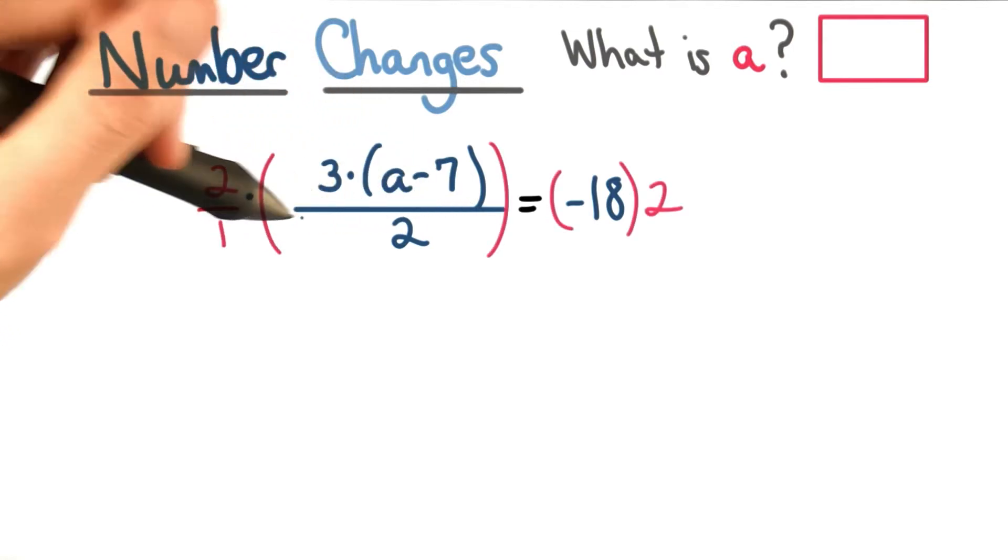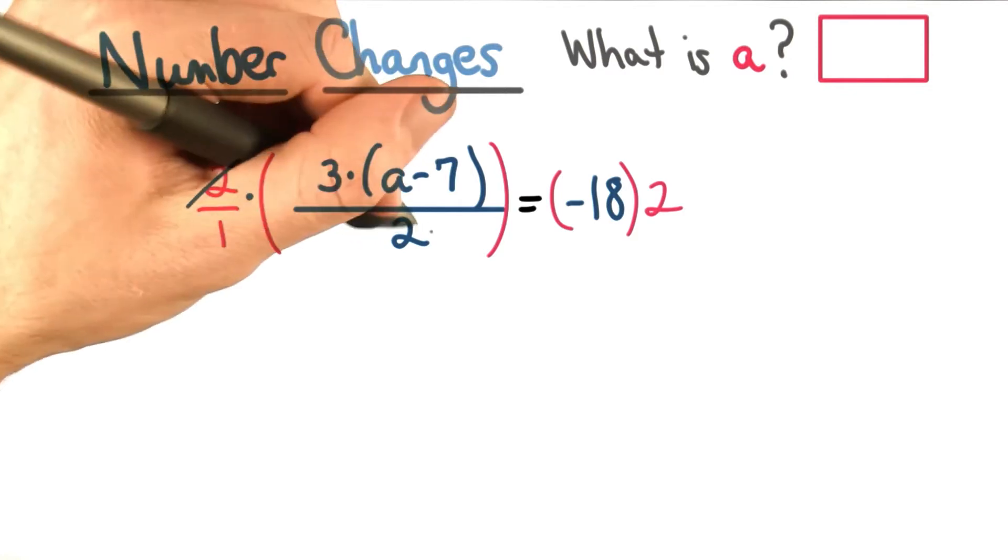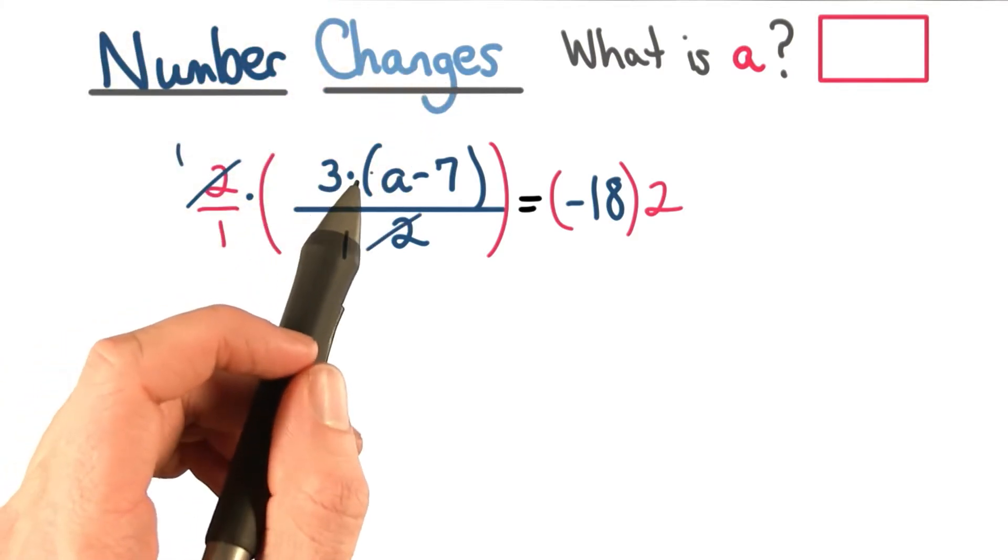Notice this is one whole fraction. I can reduce the 2's that appear in the numerator and the denominator. I'm left with 3 times the quantity a minus 7.